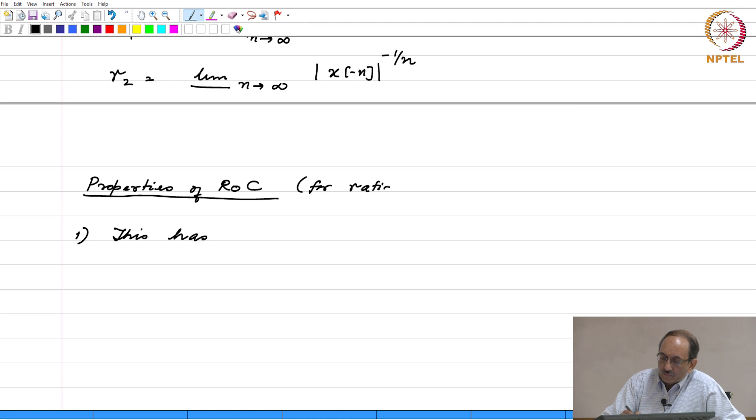We will limit ourselves to systems having or signals having a rational Z transform. This has the form R1 strictly less than mod Z strictly less than R2.